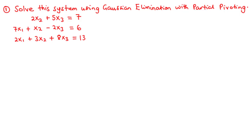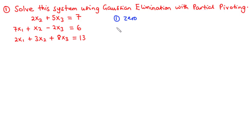With the pitfalls or problems of naive Gaussian elimination: naive Gaussian elimination is going to fail if any one of the pivot elements is either a zero or a very small number.